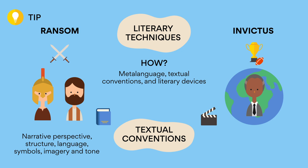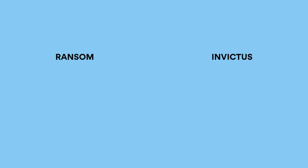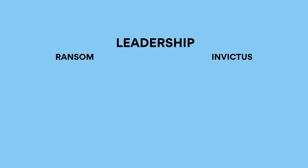Whereas Invictus is a film, so you might be looking at things like camera angles, music, mise en scène — how a shot is constructed — and even the setting. Ransom and Invictus may be different in medium, novel and film, yet both convey similar ideas on leadership through different literary techniques and textual conventions.